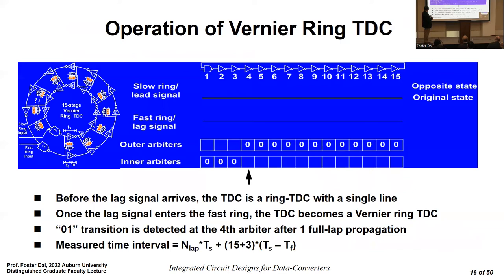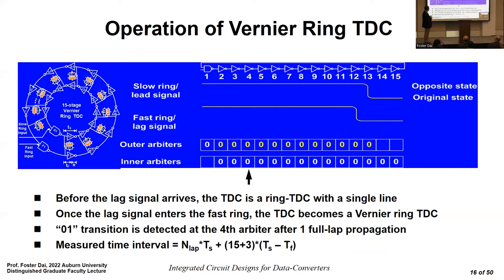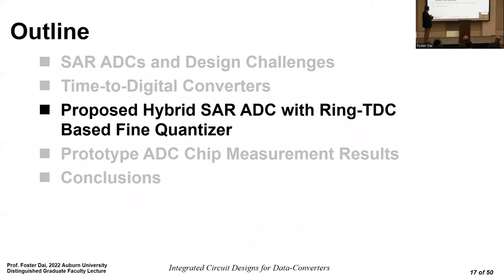This diagram shows how the two pulses race with each other. After one full lap plus three additional delay cells, the lag signal catches the lead signal, allowing us to find the time interval between the two.